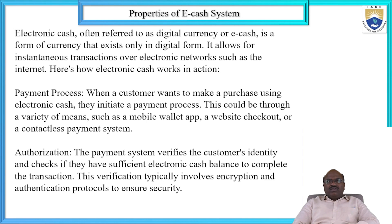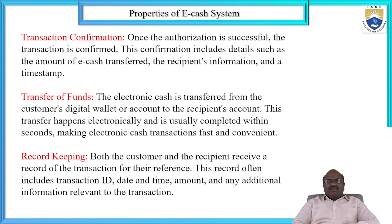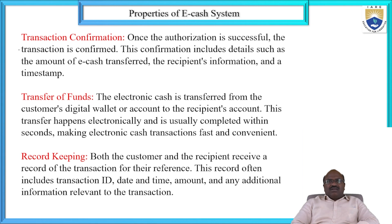The payment process and authorization are the most important properties of the e-cash system. And transaction confirmation — that is also one of the techniques. Once authorization is successful, the transaction is confirmed, including a digital receipt with the amount of e-cash transferred, the receipt information, and the timestamp. Transaction confirmation is a most important property of the e-cash system.